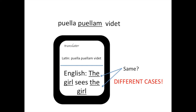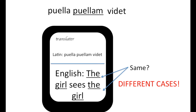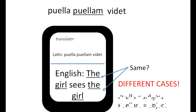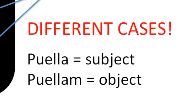Let's take a look at this English sentence: 'The girl sees the girl.' In this case, the first 'the girl,' or the Latin 'puella,' is the subject of the sentence, because that girl is seeing another girl — she is doing the action. And the second girl, 'puellam,' is the object of the sentence, because it is being seen. So 'puella' is the subject, 'puellam' is the object — that's the very basic of the cases.